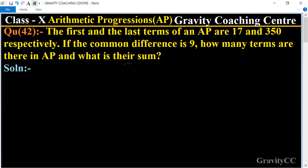There in AP and what is their sum? In this question, the first and the last terms of an AP are given as 17 and 350, and also the common difference is given as 9. So how many terms are there in AP?